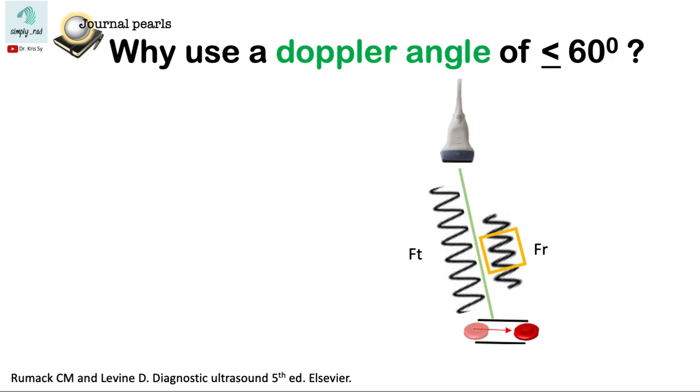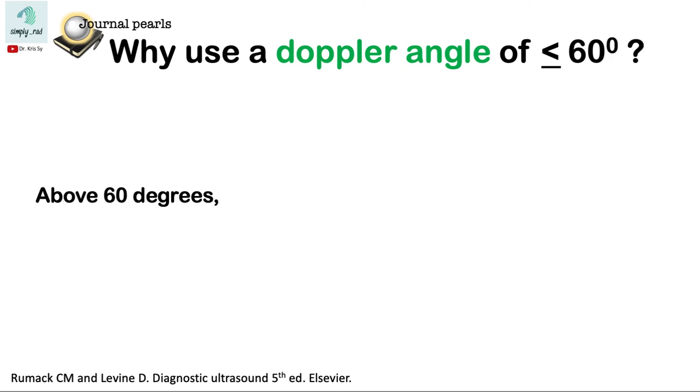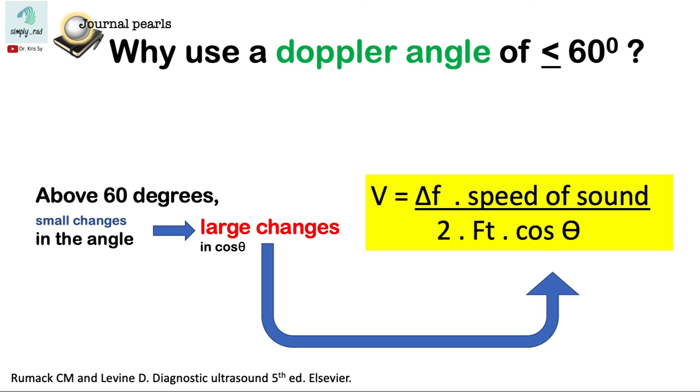So again, why use a Doppler angle of 60 degrees or lower? Because above 60 degrees, small changes in the angle lead to large changes in the value of cosine of the angle, and this would result in a large error in the estimation of the velocity.